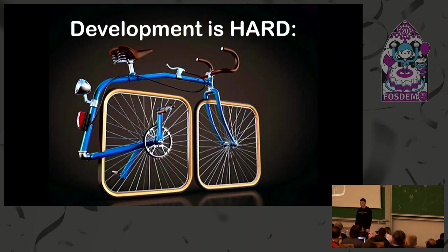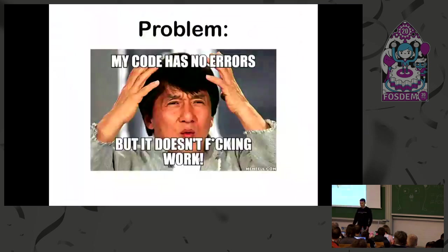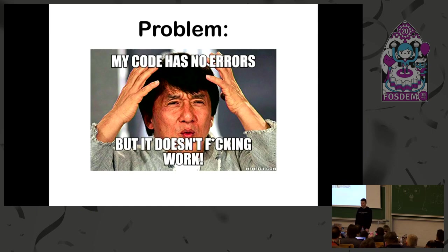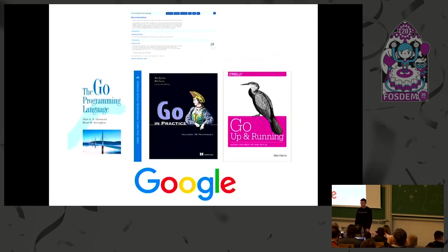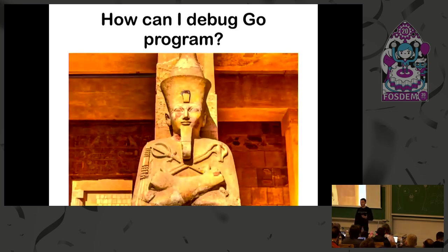Development is hard. Software development requires actual understanding, logic, and concentration about what we are doing wrong or right. We usually have a problem: we can say my code has no errors, but it does not work. Software development has one fundamental difficulty - there are lots of factors and context switching. There are many different books and official docs, but there is not enough information about how to debug your program. So I have a question to the audience: how can I debug my program?